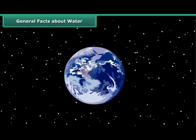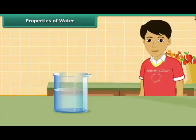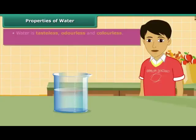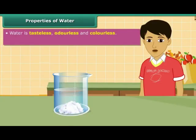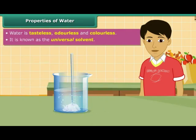In fact, the abundance of water has earned Earth the sobriquet 'blue planet.' Water is tasteless, odorless, and colorless. It dissolves many substances, so it is known as the universal solvent.